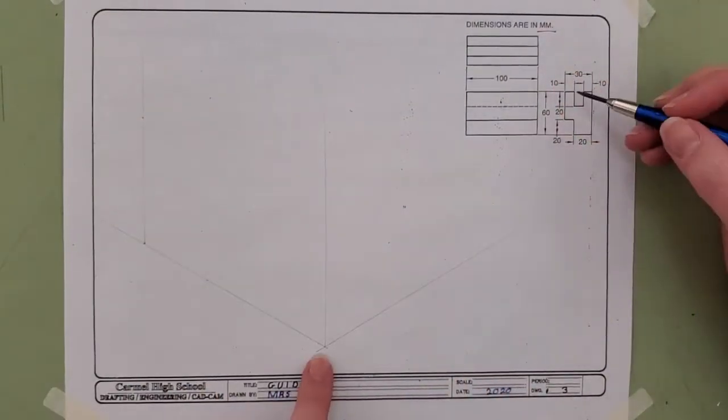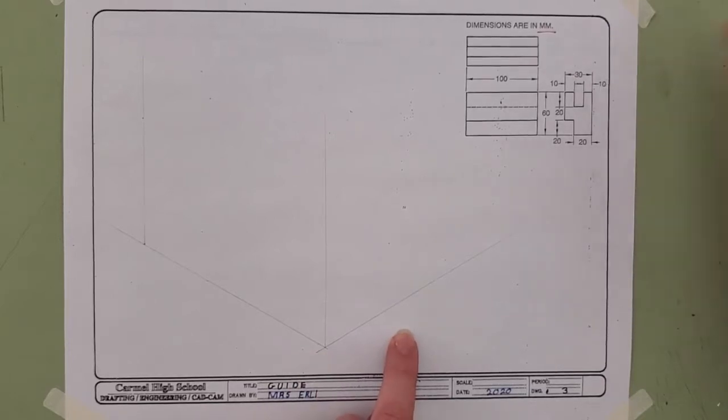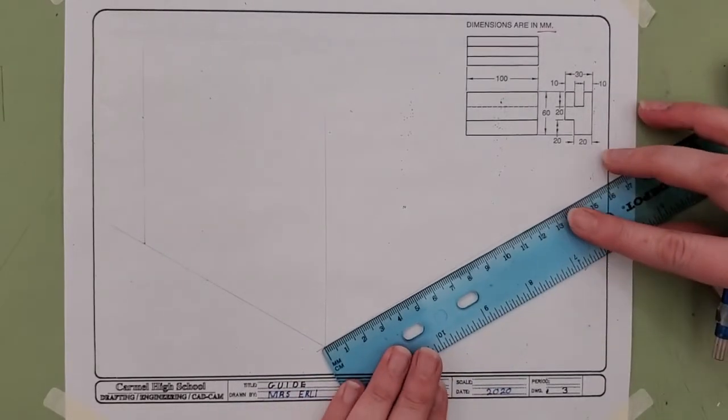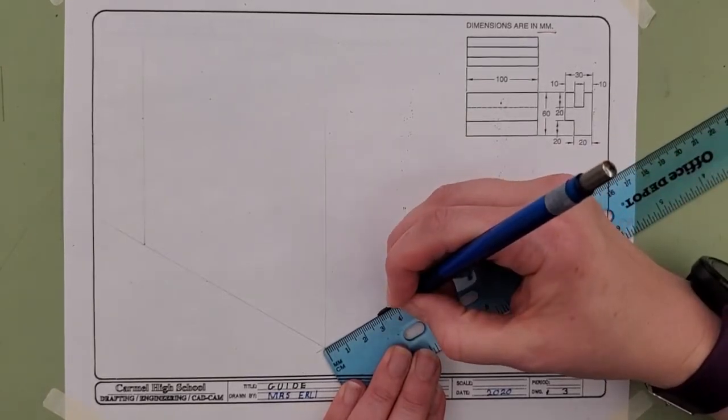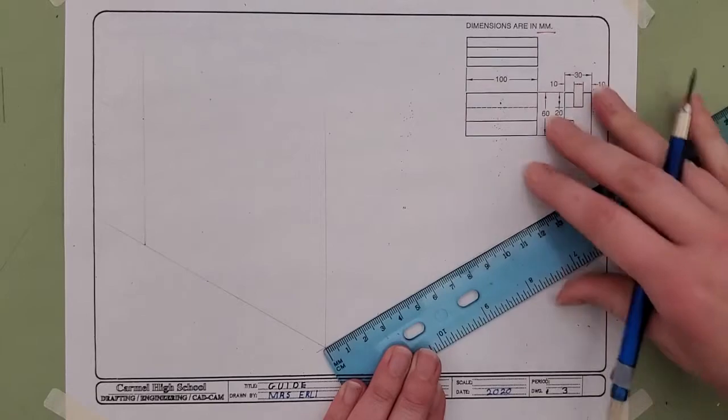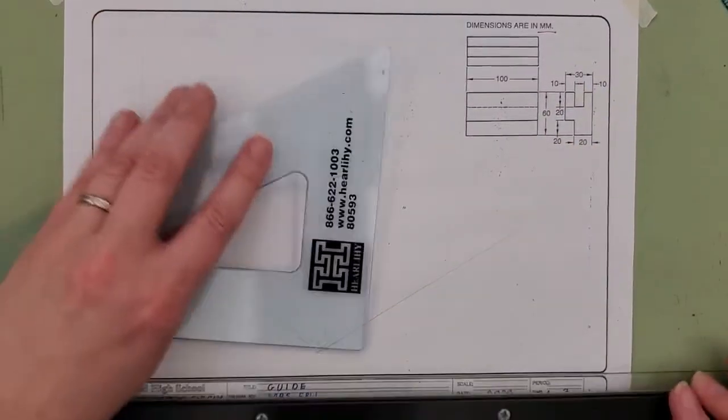My depth from front of the object to the back is a total of 60, so that's three centimeters. One, two, three. I'm going to project that up.